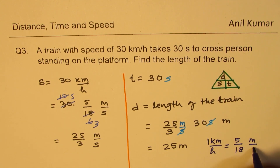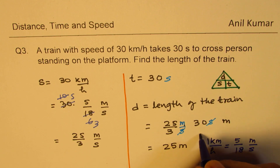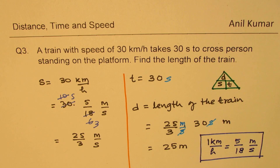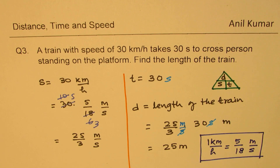The key conversion is: 1 kilometer per hour equals 5 over 18 meters per second. Combined with the distance-speed-time relation, this helps us solve all these questions. Feel free to write a comment, share your views, and if you like and subscribe to my videos that would be great. We'll take up more complicated questions in the next video — thank you.